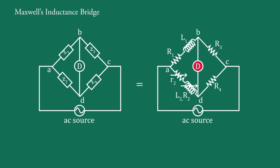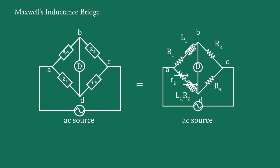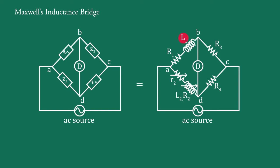Here, D is the detector — either a pair of headphones or a null detector — and the AC source drives the bridge. This bridge measures self-inductance L1 in terms of a standard inductance L2 and two resistances R3 and R4. In this circuit, L1 is the unknown inductance with internal resistance R1, and L2 is the variable standard inductance with fixed resistance R2. Small r2 is a variable resistance, while R3 and R4 are non-inductive resistances.